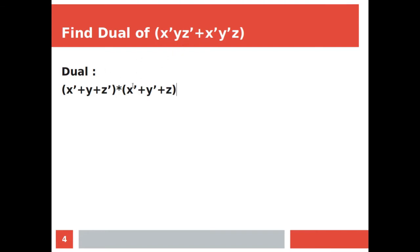So what I did here: I converted product into plus and plus into product. There are no changes in literals — if there is X complement we write X complement, if there is Y we write Y. Changes only take place in plus to product, product to plus, zero to one, or one to zero.